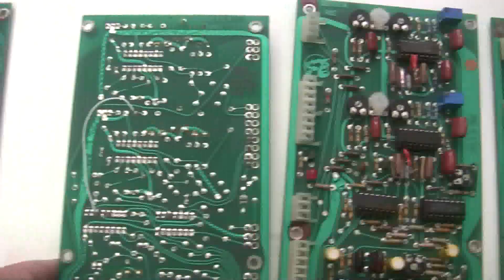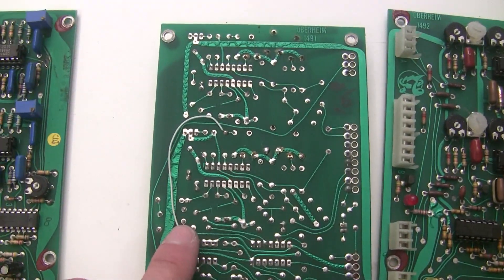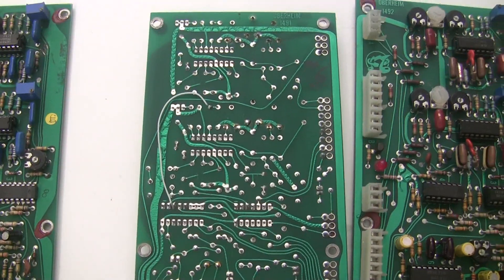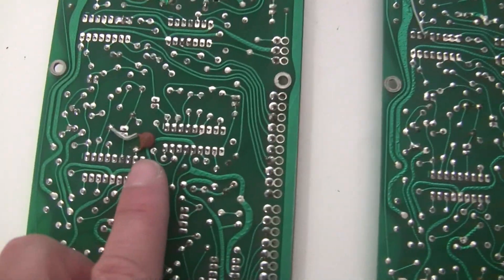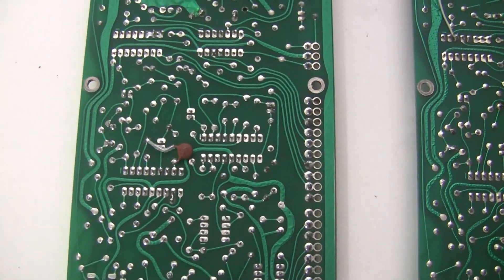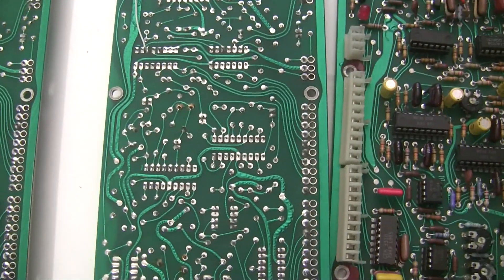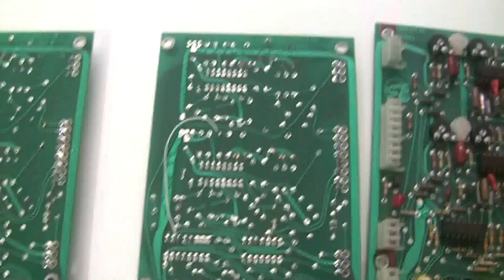You had also asked about this jumper wire. And this is also something to do with it being an earlier revision board. So on the later revision voice boards, there's a little capacitor here that's added on the back that's not present on the earlier revision. So these are okay.